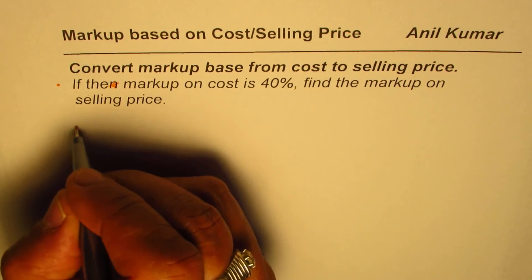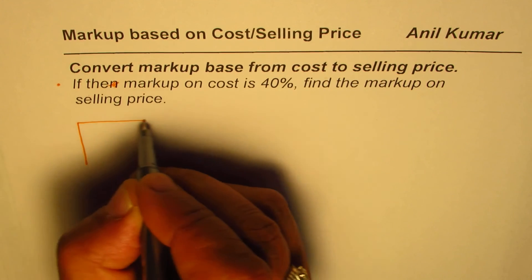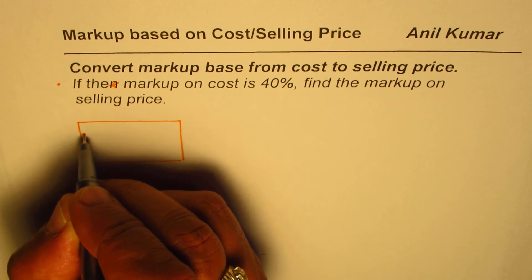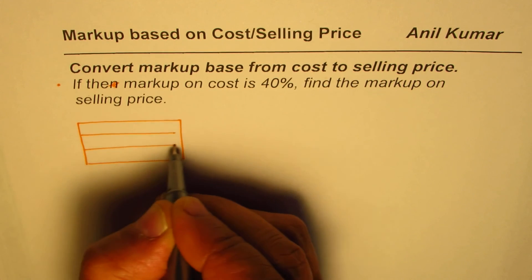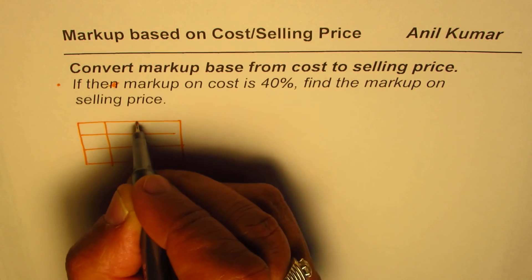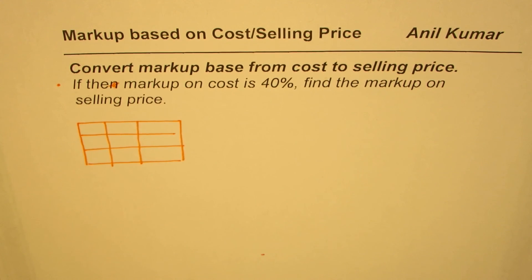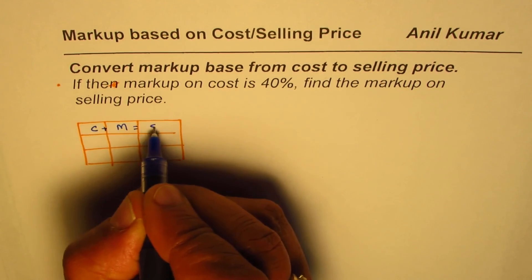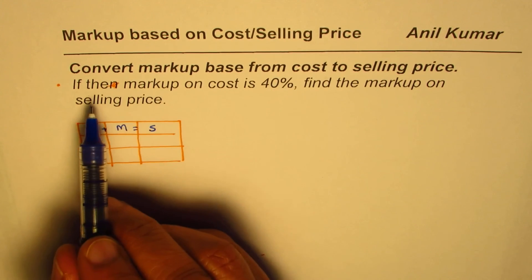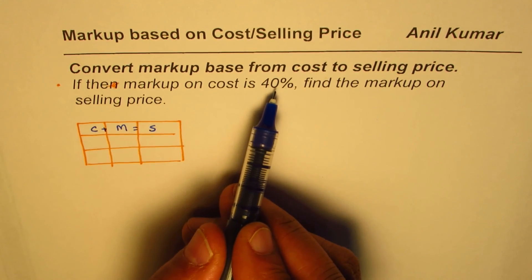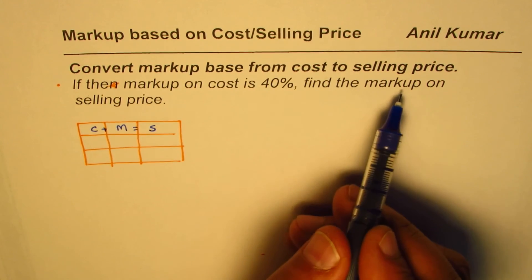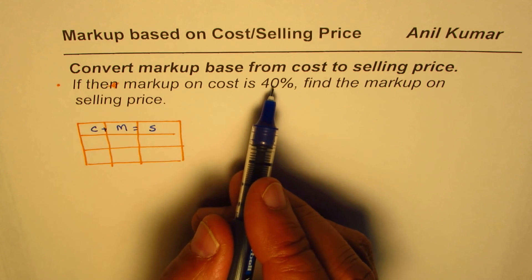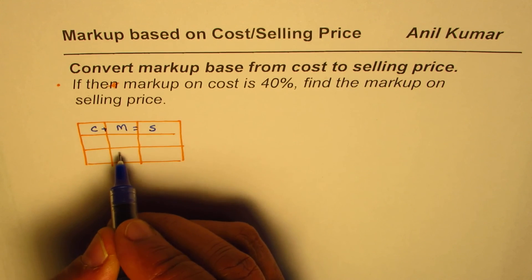So what we're given here — I'll put the data in a 3 by 3 matrix or table and then we'll try to figure it out. Cost plus markup equals selling price. Markup on cost is 40%, so markup is 40%.